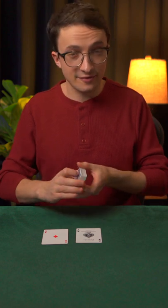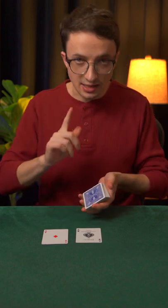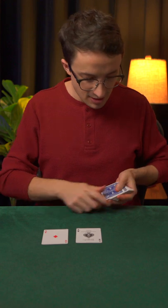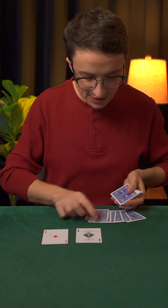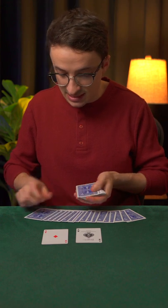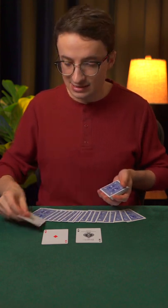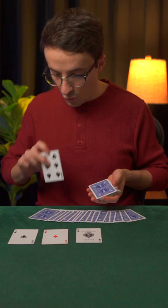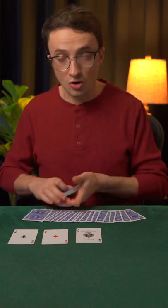Now, I can tell that the next ace is 19th from the top. Let's count. That's 1, 2, 3, 4, 5, 6, 7, 8, 9, 10, 11, 12, 13, 14, 15, 16, 17, 18. And the 19th card is the next ace. And look, one card below or above, no aces.